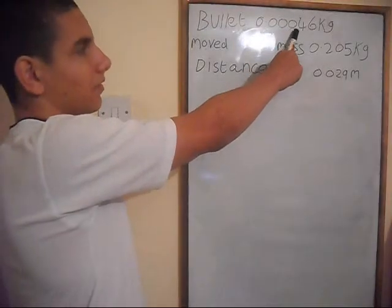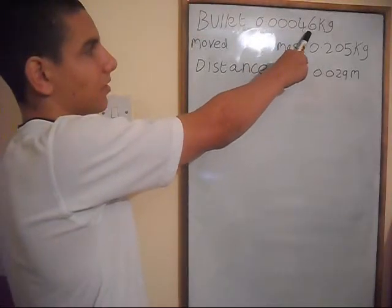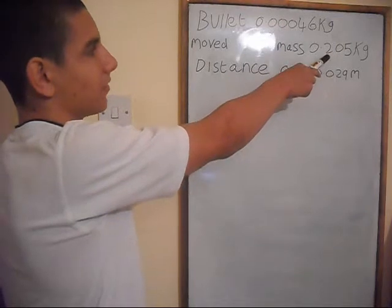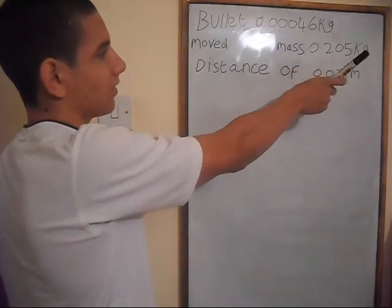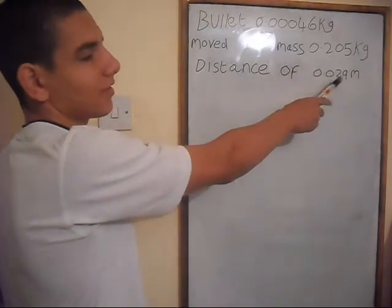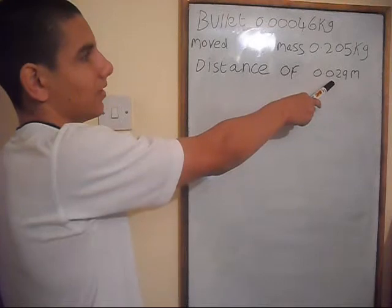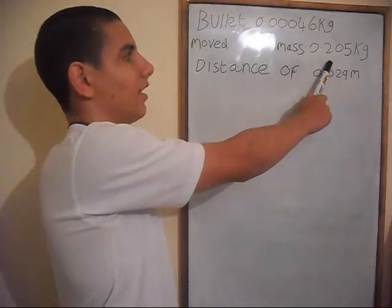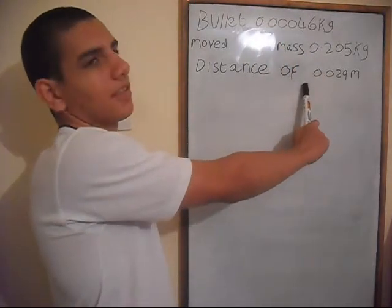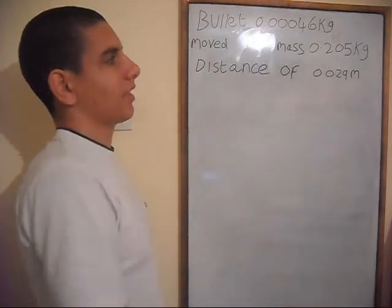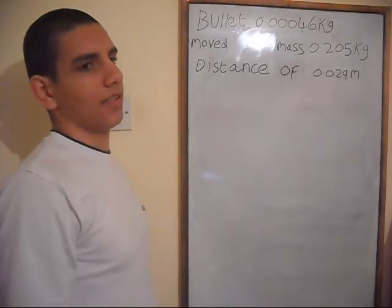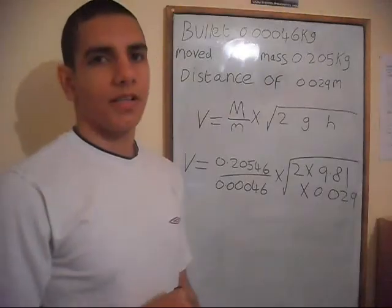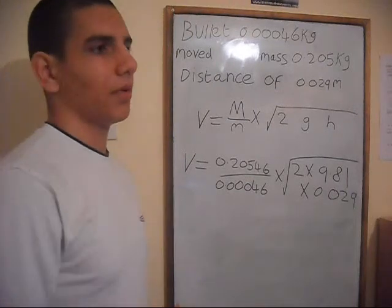This bullet has a mass of 0.46 grams. It moved a mass of 205 grams a vertical distance of 2.9 centimetres. Masses are in kilograms and distance is in metres — these are the standard units for these measurements. So let's calculate the velocity of this bullet.